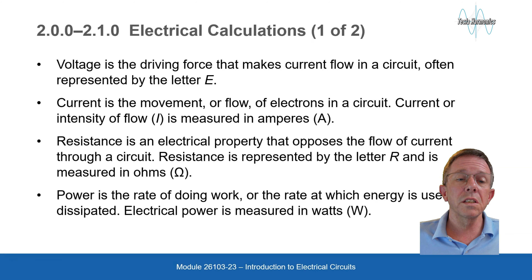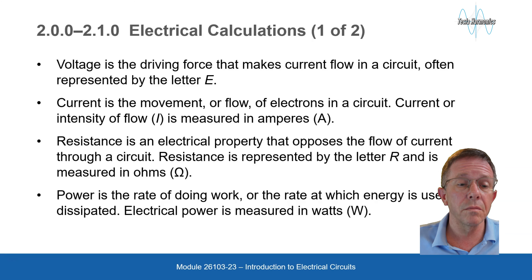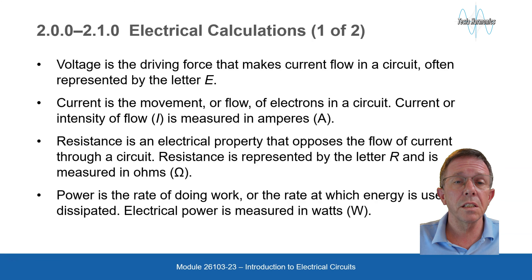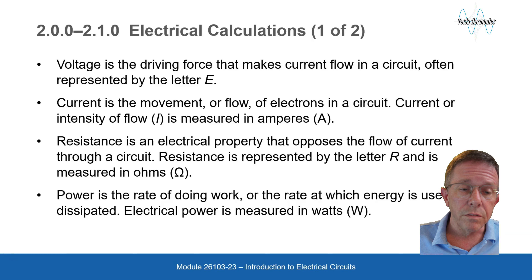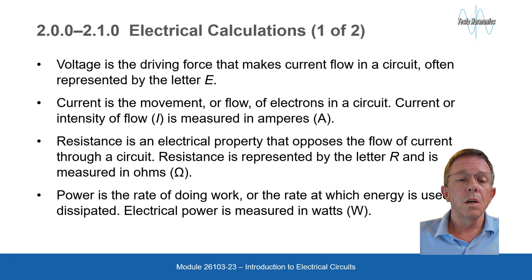Voltage is a driving force that makes current flow in a circuit, often represented by the letter E. Current is the movement or flow of electrons in a circuit; current or intensity of flow I is measured in amperes, A. Resistance is an electrical property that opposes the flow of current through a circuit, represented by the letter R and measured in ohms.